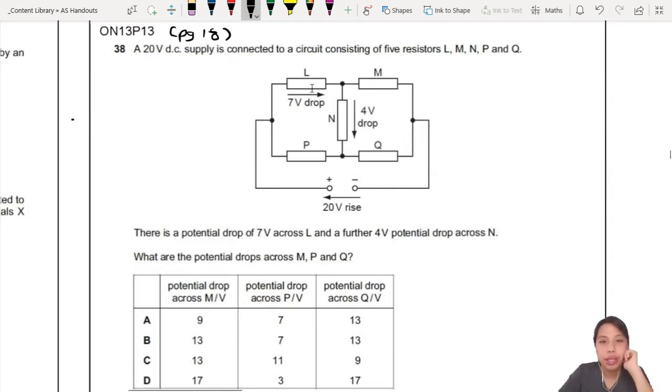So here you have a DC supply connected to a circuit with five resistors. Potential drop, whatever is given, is already written there. Find the potential drop across M, P, and Q. Try to solve this puzzle. It's like those Sudoku puzzles, they give you a few numbers, you have to find the rest. It is possible. Hint, use Kirchhoff's law to draw loops if you can. Give yourself some time to try this one out, two minutes or something like that.